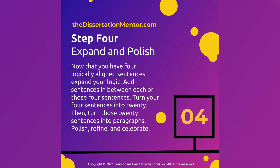Step four is to expand and to polish. First, look at your four sentences. Is there alignment between that global crisis and what practitioners know about that crisis? Next, look at whether there's alignment between what practitioners know about that crisis and what researchers are asking us to find out about that crisis. And finally, is there alignment between what researchers are asking us to find out and your purpose statement — your proposed study that we're going to be pursuing in your larger dissertation?